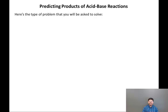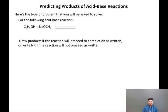Here's the type of problem you'll be asked to solve involving acid-base reactions and pKa's. For the following acid-base reaction, C6H5OH plus NaOCH3, draw products if the reaction will proceed to completion as written, or write NR (no reaction) if the reaction will not proceed as written.